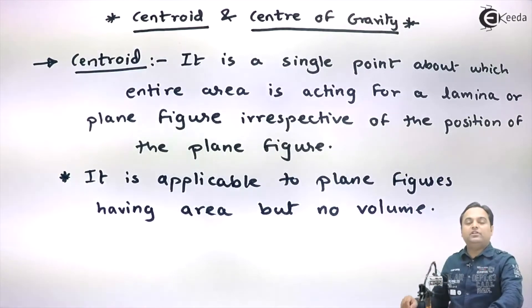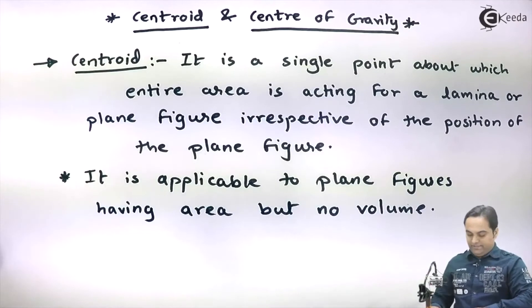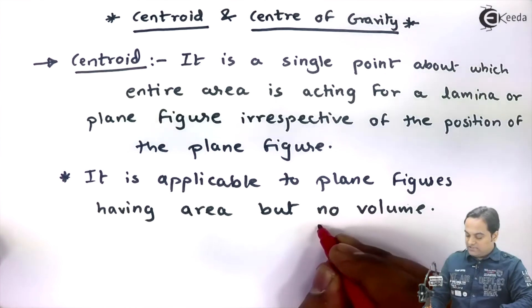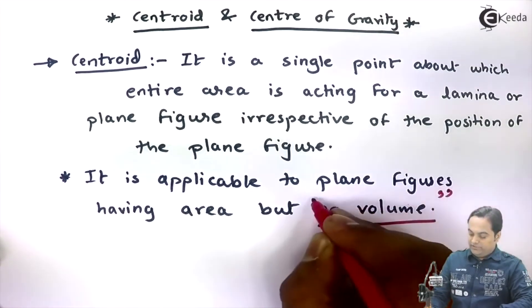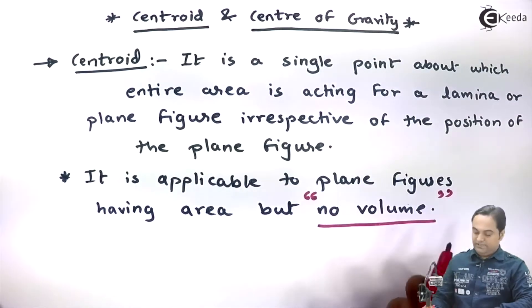So here I have clearly defined what is centroid. When you talk about centroid it means you are talking about a figure which has area but which has no volume. By no volume it is clear that it is not a solid but a 2D figure.